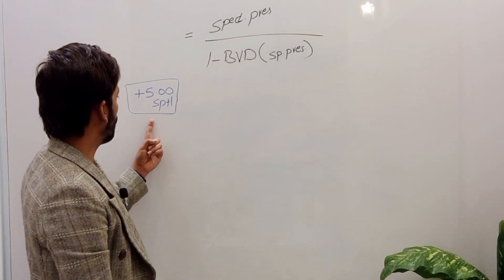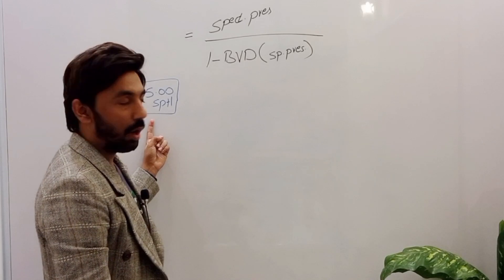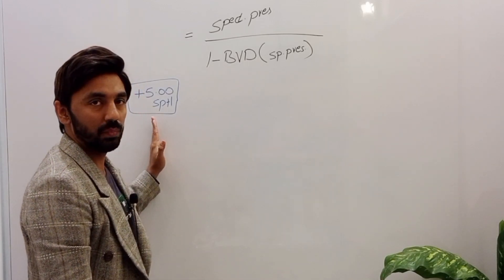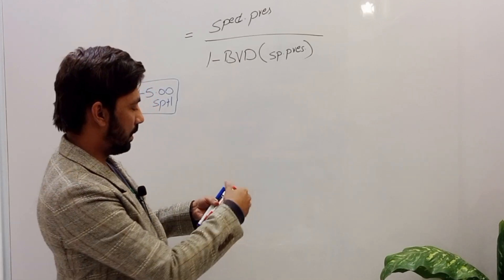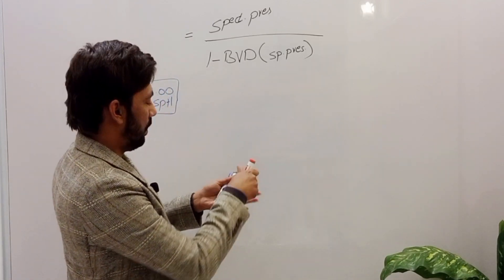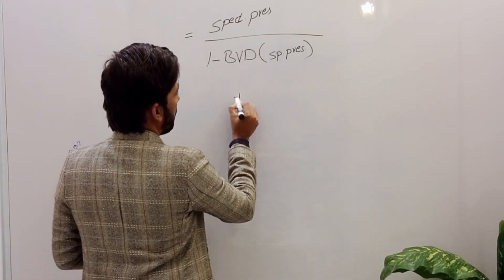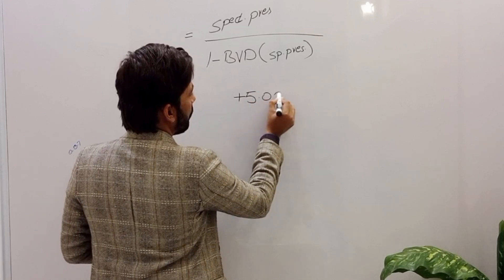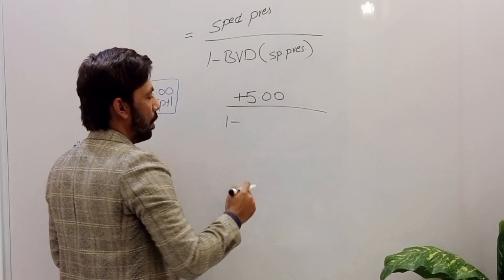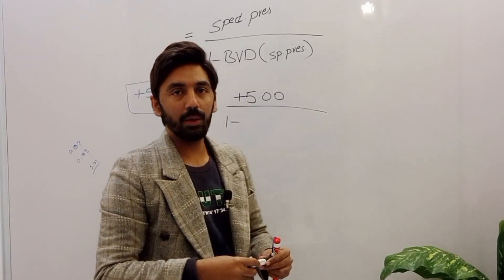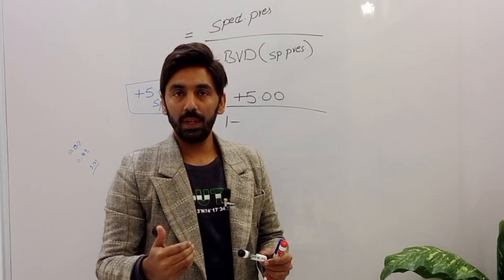In this case, we have a plus 5.00 spherical correction in spectacles and we will convert this into a precise contact lens prescription. Let's put the values: spectacles prescription is plus five, and we need to measure the back vertex distance. For this example, the back vertex distance is 14 millimeters.